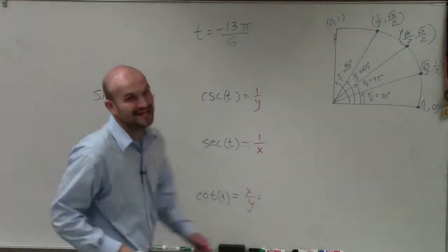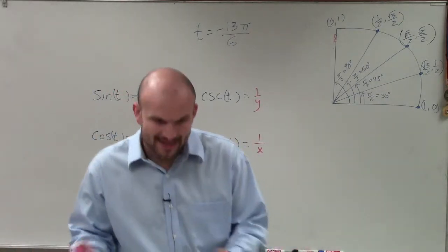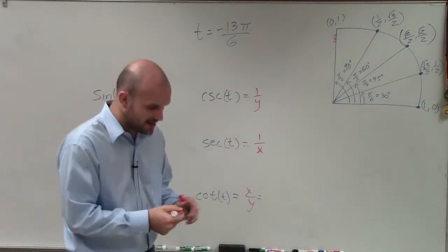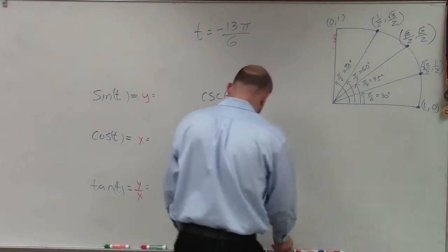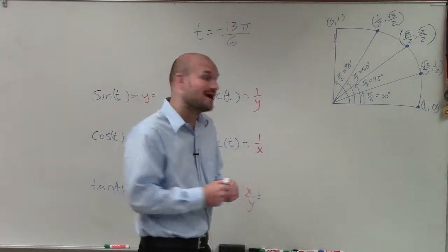All right. So we have t equals negative 13π over 6. And a couple different ways we could do this. One of the ways that we look into doing problems like this is simply graphing them.